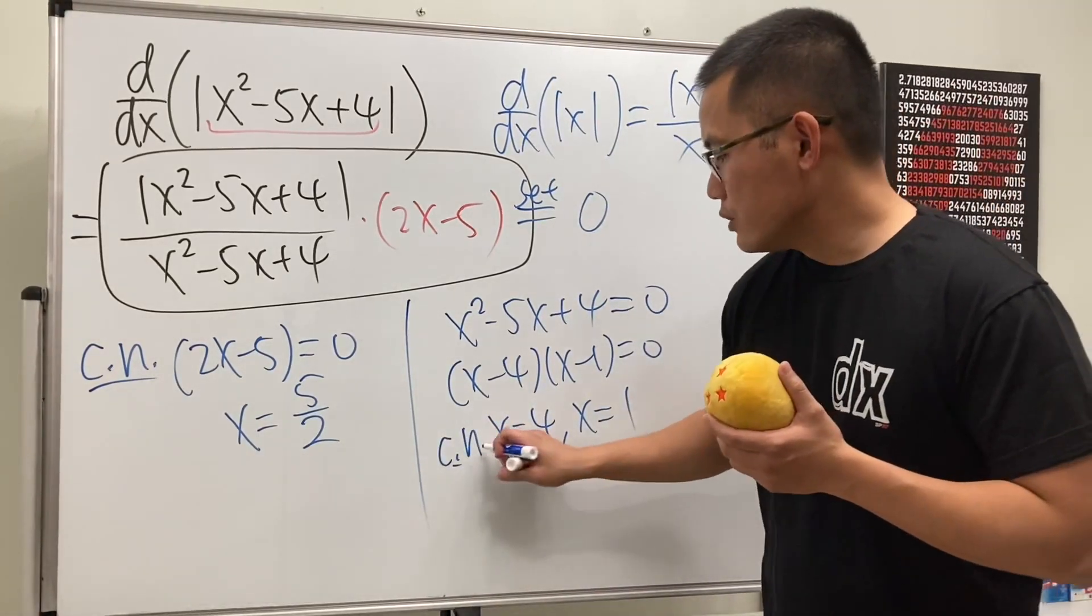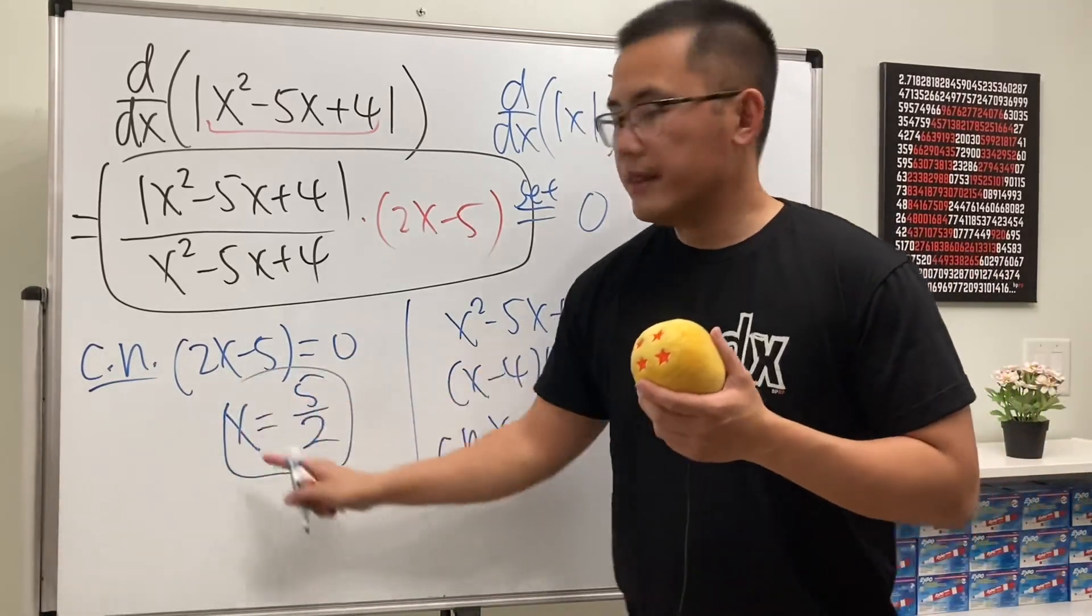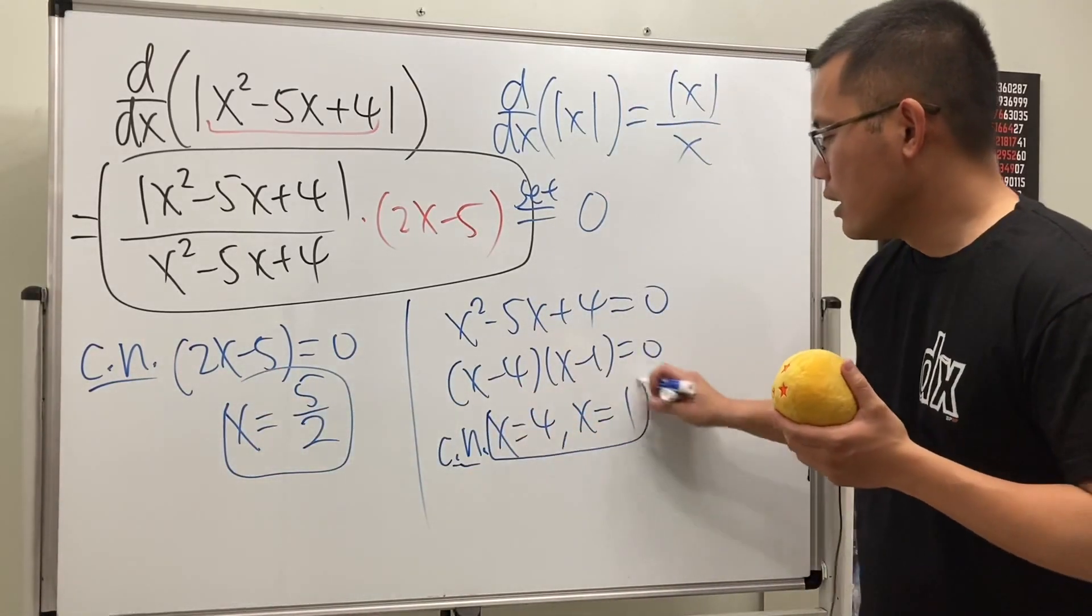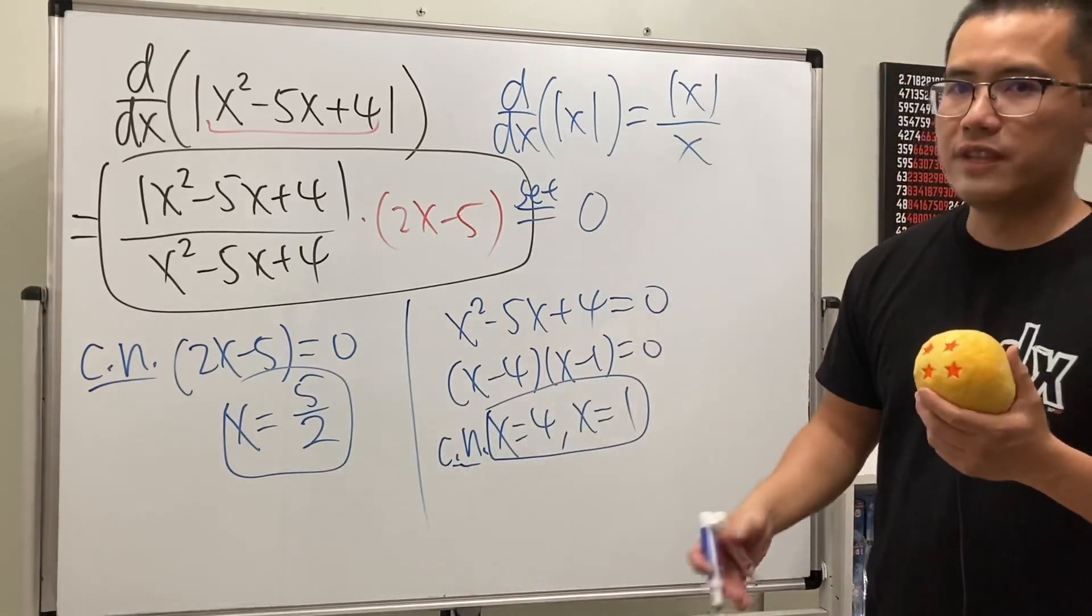So altogether, we have three critical numbers. This is where the derivative is equal to 0, and then these are the places that the derivative does not exist.